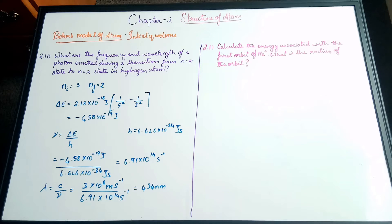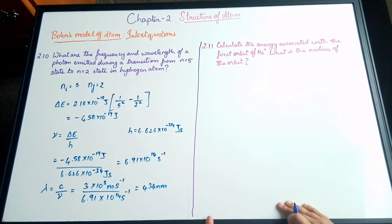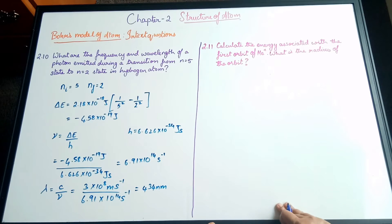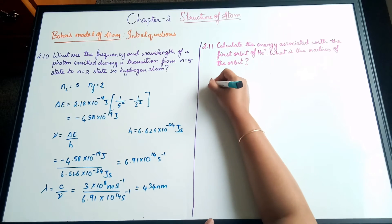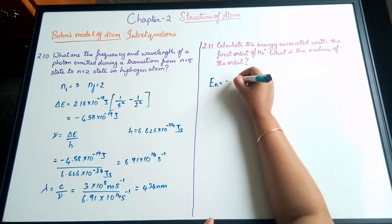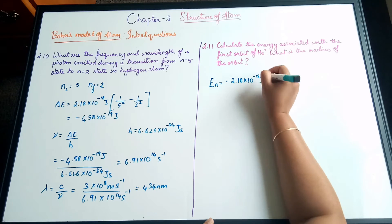Calculate the energy associated with the first orbit of helium plus. What is the radius of the orbit? When we discussed Bohr's model for hydrogen, we noted these equations are also applicable to single electron systems. Helium normally has two electrons, but He⁺ has only one electron, so we can use the equation we discussed.